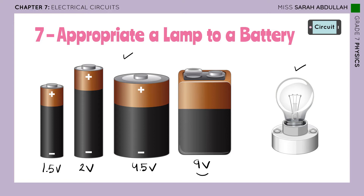As you guys can see, we have different voltages depending on different batteries. This voltage is the voltage given out by these batteries — they give this voltage because the battery is a source of electricity. About the lamp, there is also a voltage written on the lamp. The voltage written on the lamp — I'm going to say it is 4.2 volts. A lamp is not a source of electrical current, so it doesn't give out electricity. This voltage is the voltage needed by the lamp to glow normally.